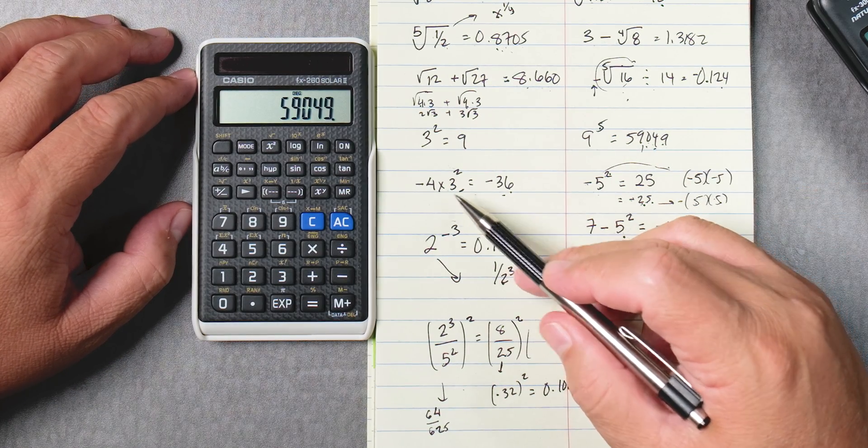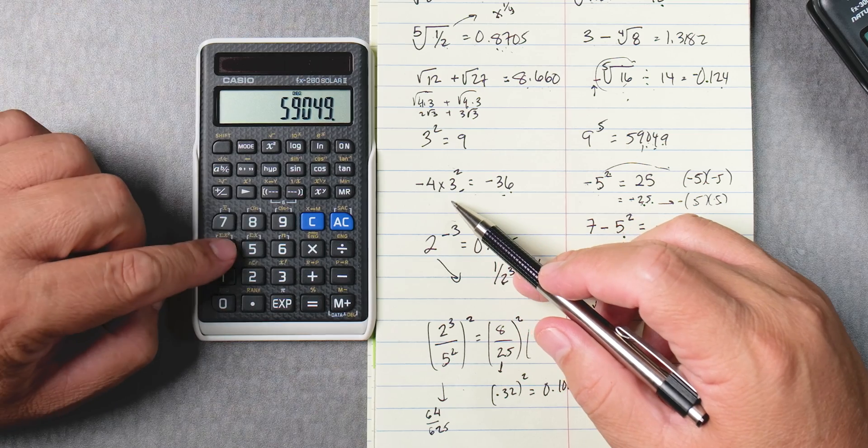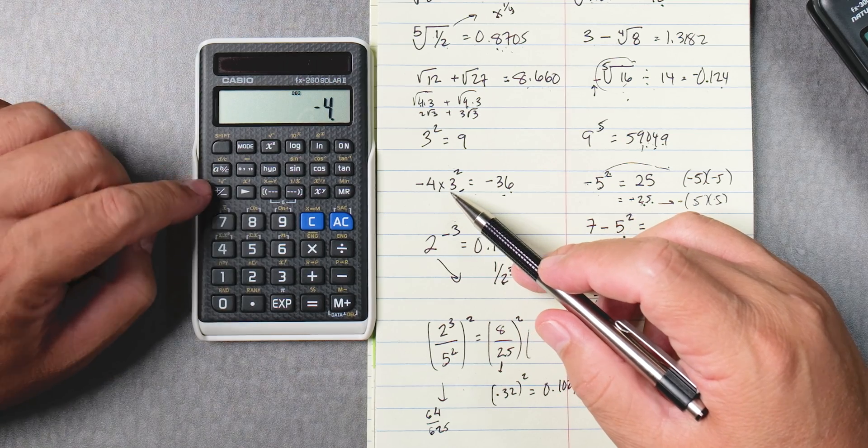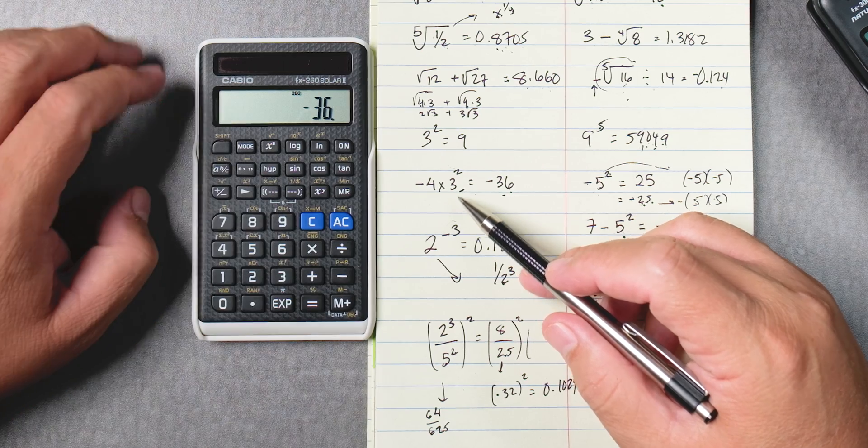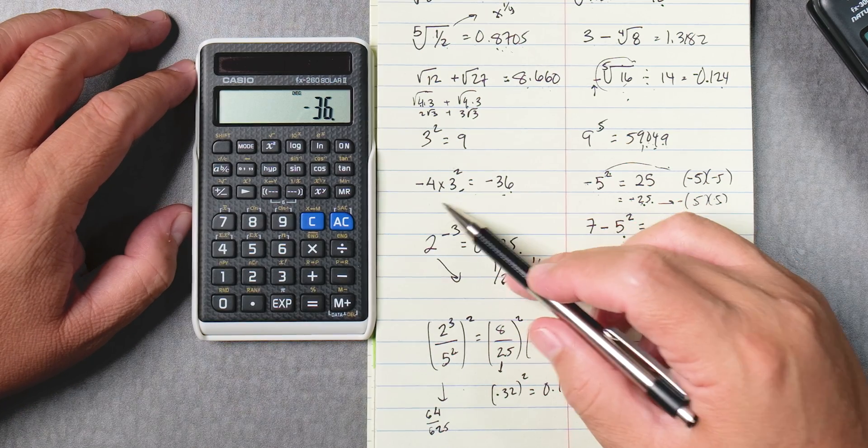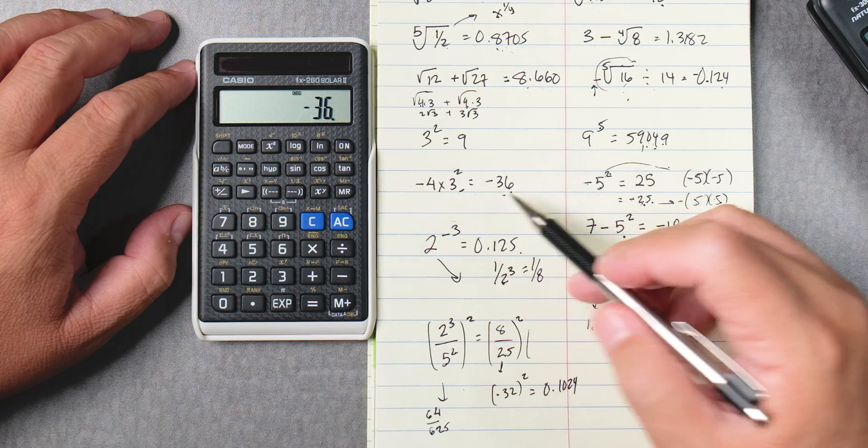This one four, I'm going to have to type four and then the negative times three squared equals, so it knows the order of operation, negative 36. Nine times negative four.